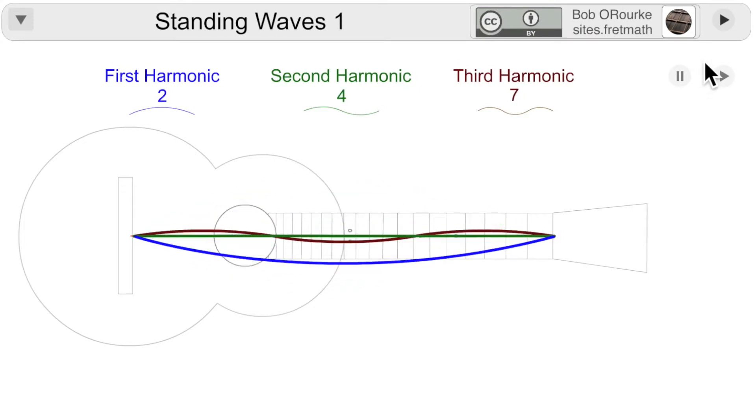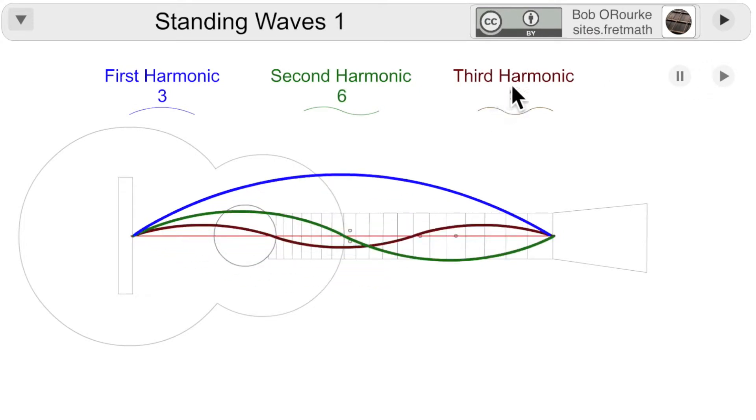Here are the first three standing harmonic waves. The important thing is the ratios of the completed cycles. Nine to six reduces to three to two, which is the perfect fifth. And six to three reduces down to two to one, the octave.